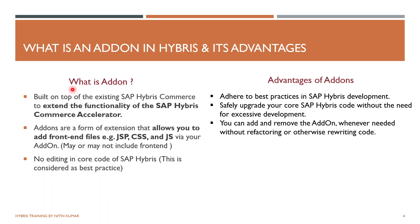What are add-ons? Add-ons are something which extends the functionality of SAP Hybris Commerce Accelerators. If you have a ready-made website developed by you — let's say you have a B2C Accelerator installed and you want to add some additional functionality to it without hampering the existing code — you install an add-on. That add-on may or may not have front-end capabilities, such as JSP, CSS, and JS, depending upon which add-on you install.